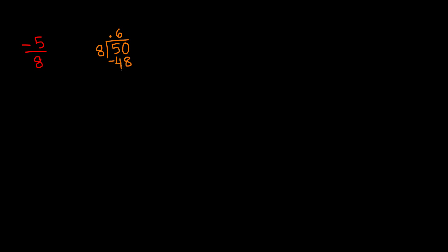So now we have 50. 8 times 6 gives us 48, and we're left with 2. If we add another 0, we have 20. So 8 times 2 gives us 16, and we are left with 4. Again, add a 0, and 8 times 5 gives us 40. So our answer is 0.625.